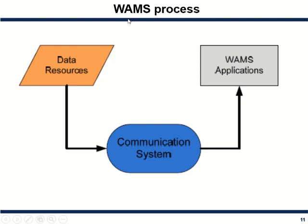The WAMS process mainly depends on data. The data which is available is communicated to the application part, which then controls the power system. The data resources are categorized into two types: functional data and non-functional data. Functional data — the more important, real-time data used minute to minute — includes voltage, current, and frequency.